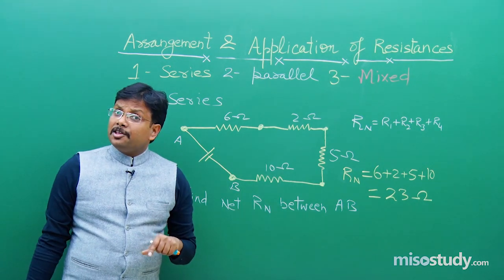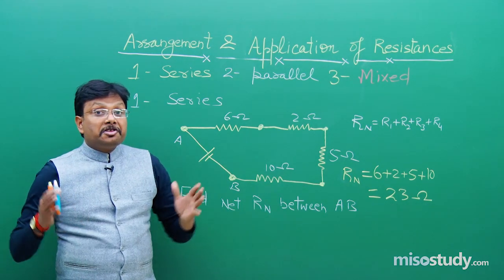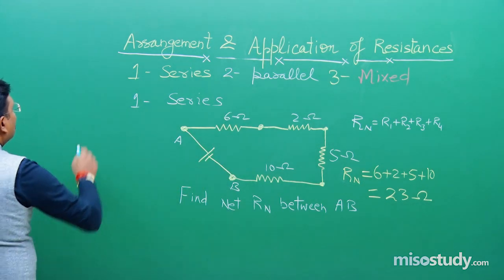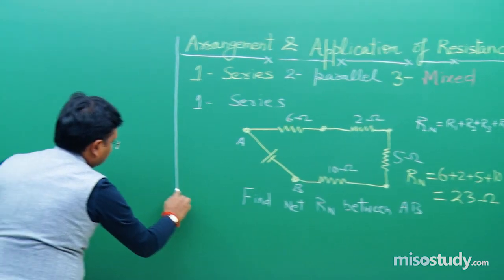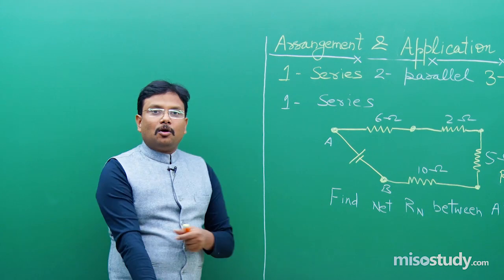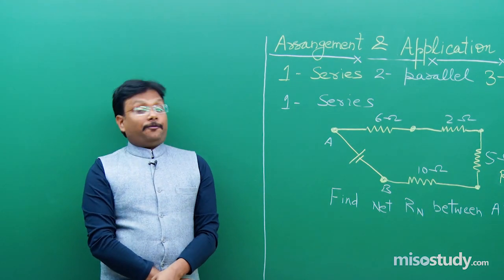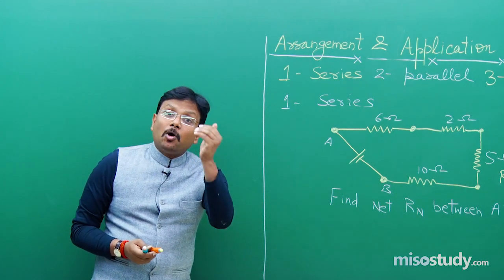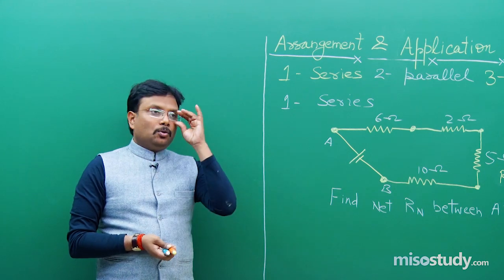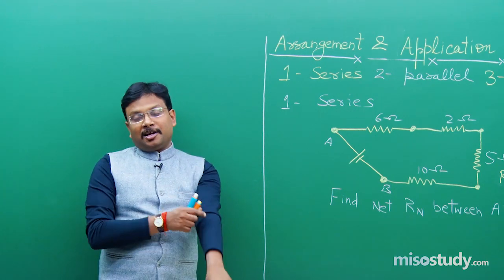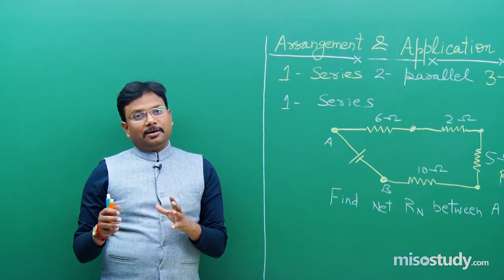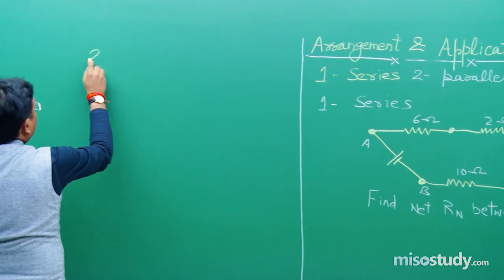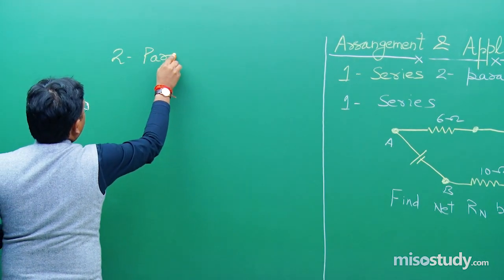The conclusion of series combination is that the final resistance is maximum. Now come to the parallel combination. In parallel combination the final resistance will be minimum — less than the smallest value. One end of each resistor is connected with each other, and the other end with each other. Let us take a look at an example for parallel.